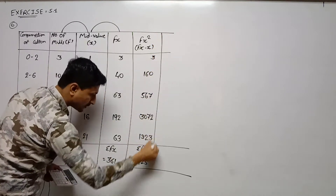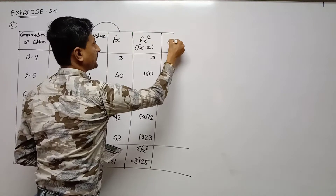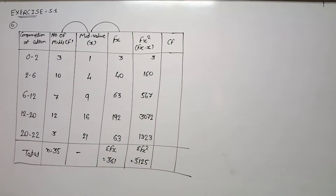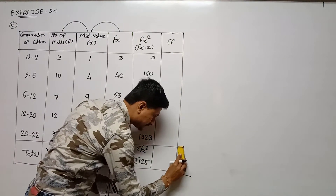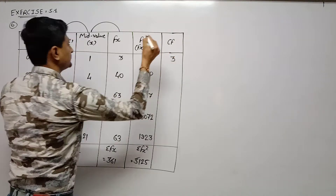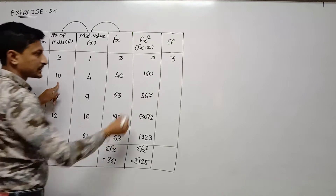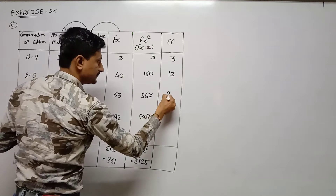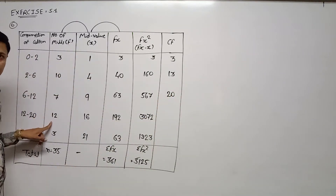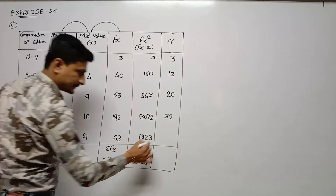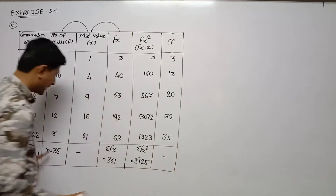The last column is cumulative frequency (CF) — addition by frequency. First frequency: 3; 3+10=13; 13+7=20; 20+12=32; 32+3=35, which equals the total number of mills.